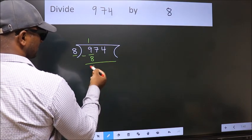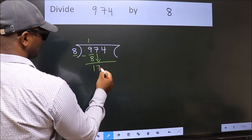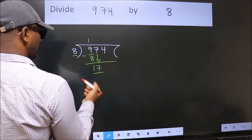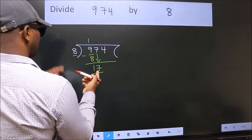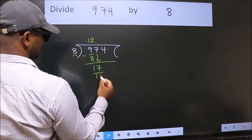After this, bring down the beside number. So 7 down, making 17. A number close to 17 in the 8 table is 8 twos, 16.